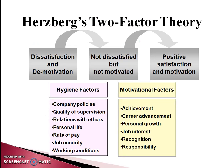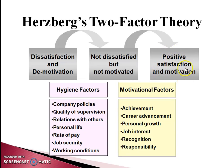Another important theory is Herzberg's two-factor theory, propounded by Herzberg. It talks about two factors: hygiene factors and motivational factors. Hygiene factors are prerequisites — if present, they do not increase satisfaction, but if absent they create dissatisfaction and demotivation. Motivational factors are responsible for motivation; if absent they create no dissatisfaction, but if present they lead to higher satisfaction and motivation.